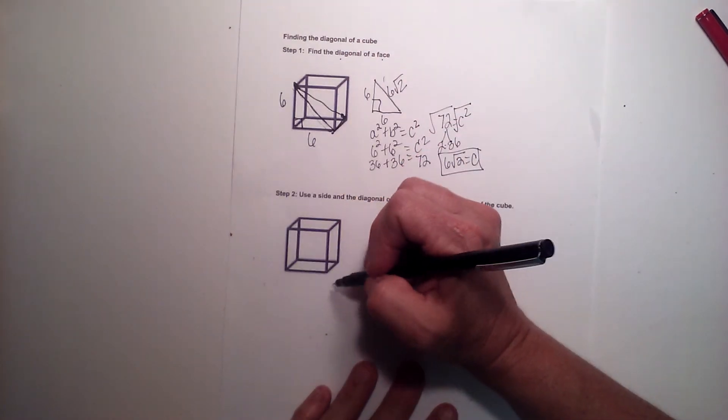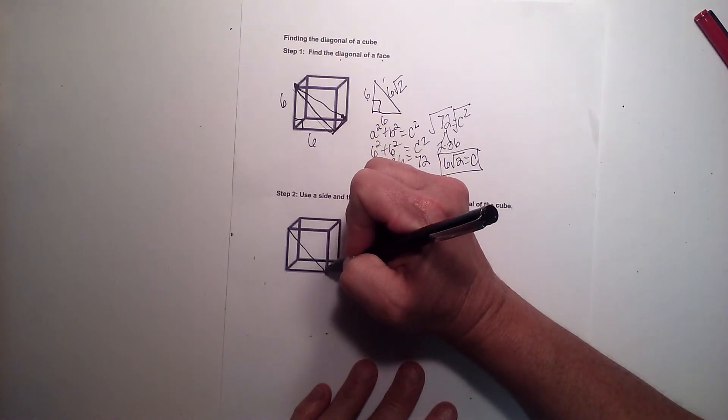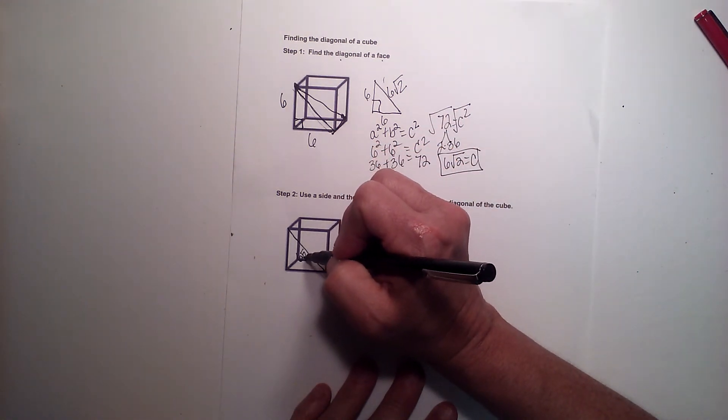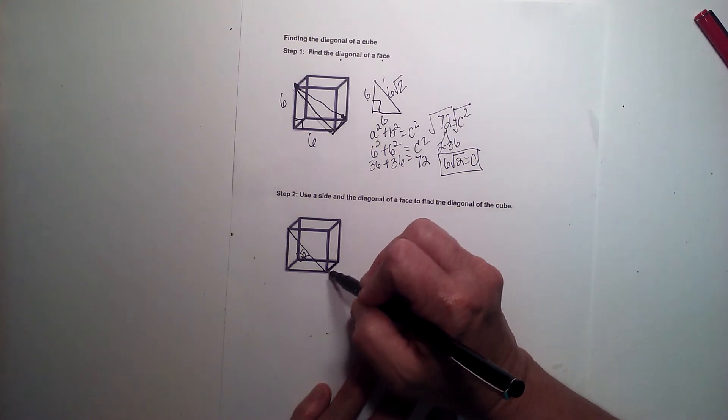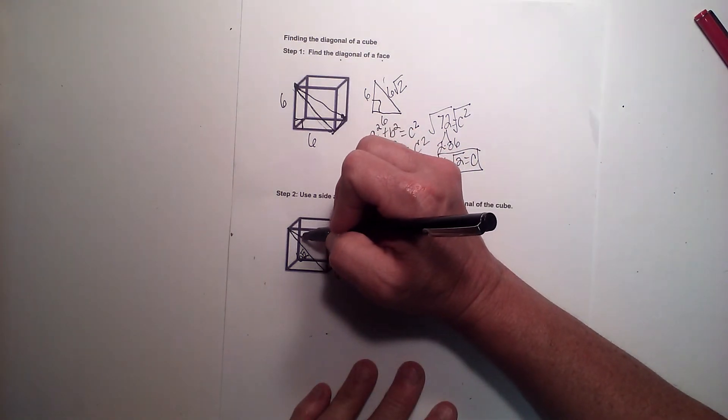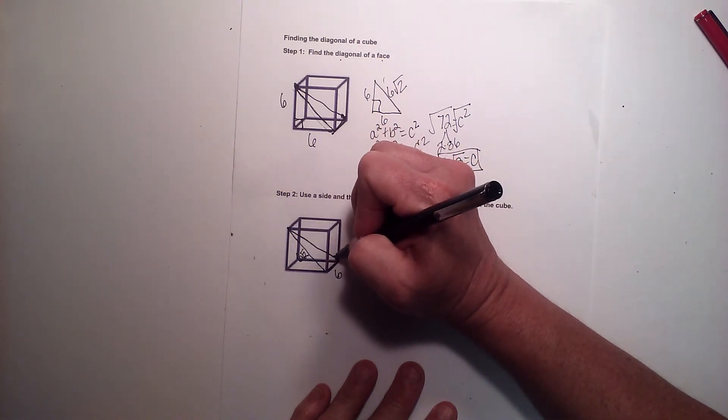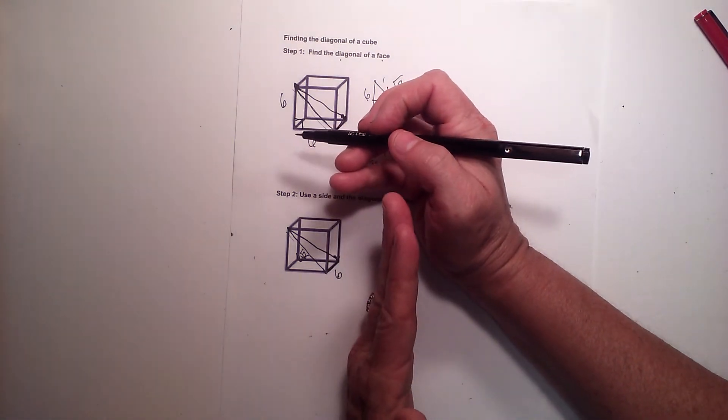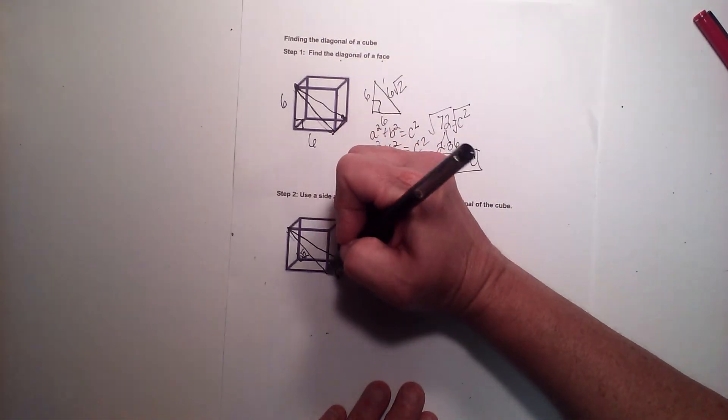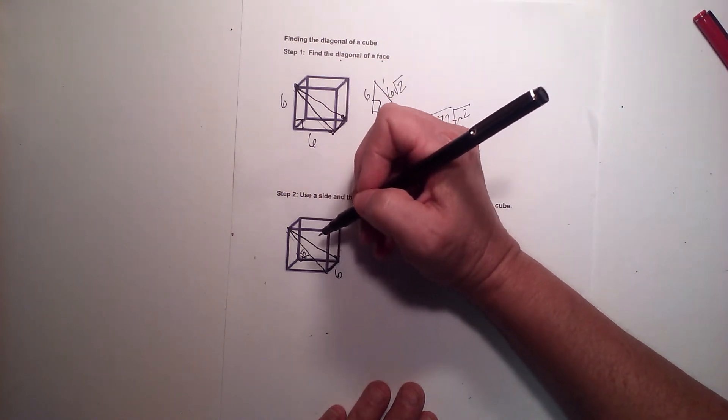We're going to go down here and we're going to draw just this. So we're going to use this side, which is 6 square root 2. We're going to use this side of the cube, which is 6. And we are trying to find the diagonal that connects the top left corner to the bottom right corner. Well, if you can see it, it's a triangle that's laid kind of at a diagonal across the face of the cube.